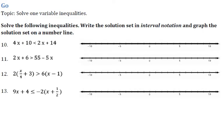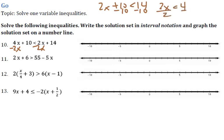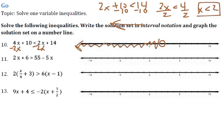Alright, now solving one-variable inequalities and graphing them - just a review. Get the x's on the same side and treat it just like an equation. We'd end up with 2x + 10 < 14, subtract 10, so 2x < 4, divide by 2, and x < 2. So I go to 2, and I have to decide: solid circle or hollow circle. No equal to, so it's a hollow circle. 2 is my boundary, x is less than, so less than means going to the left.